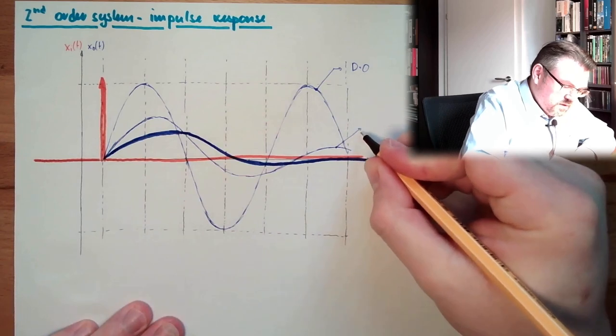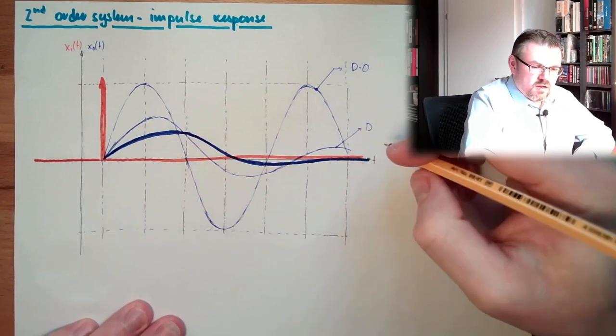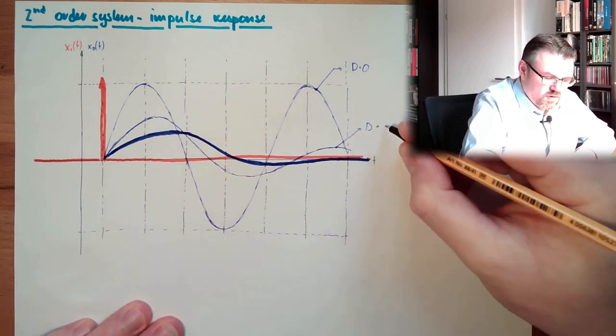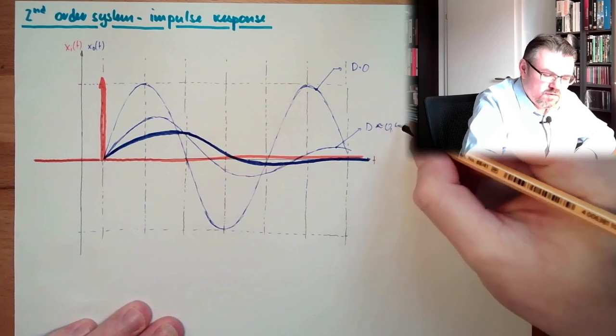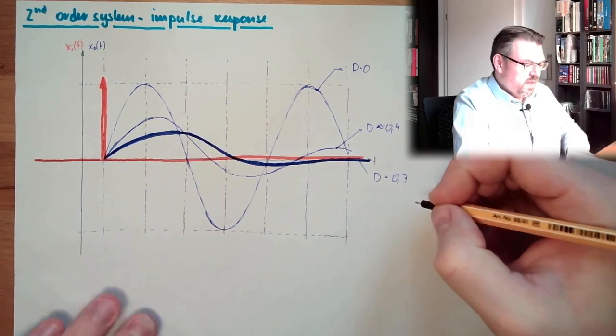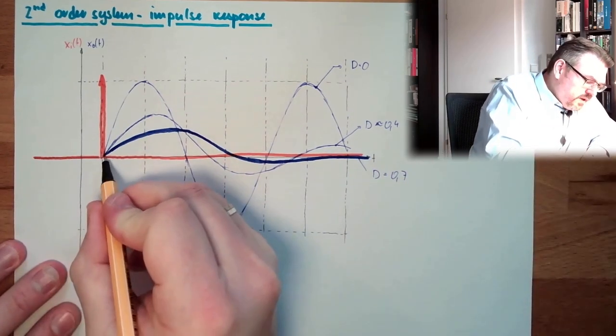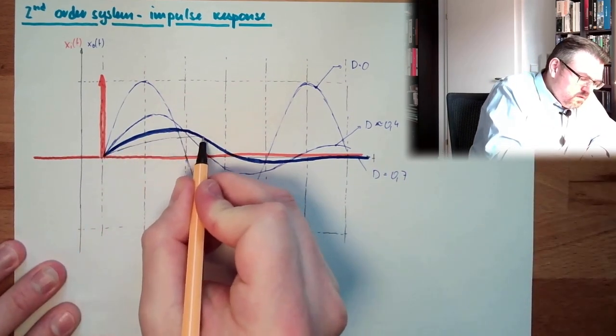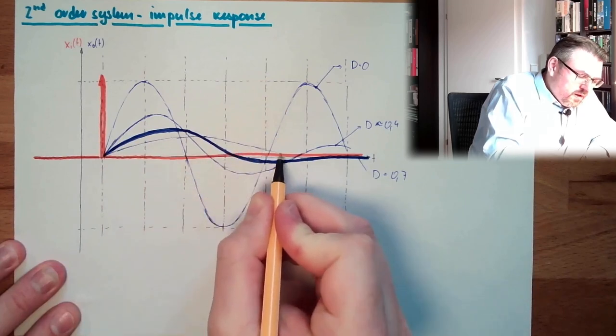So this is damping 0.4, around 0.4. This is damping 0.7. And damping 1 means we go up, go back, and that's it.